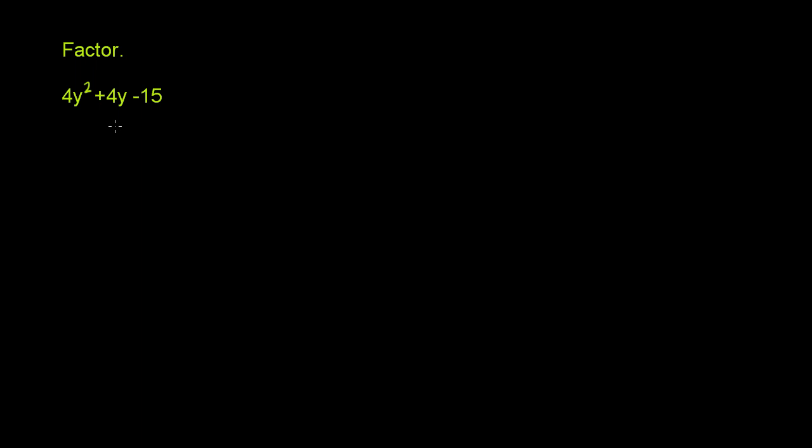To factor by grouping, we look for two numbers whose product is equal to 4 times negative 15. So we're looking for two numbers whose product, let's call those a and b, is going to be equal to 4 times negative 15, or negative 60. And the sum of those two numbers, a plus b, needs to be equal to this 4 right there.